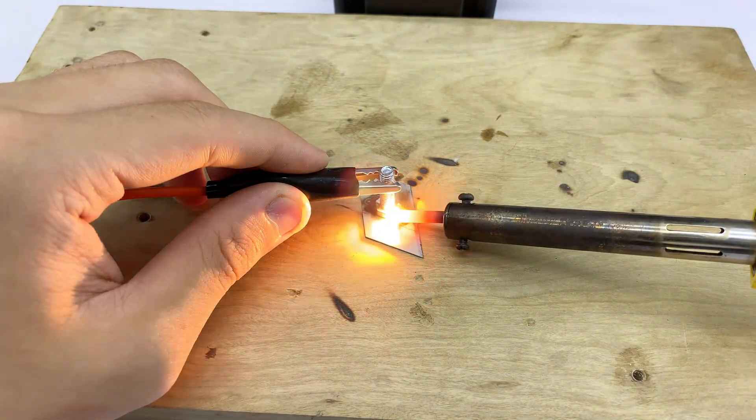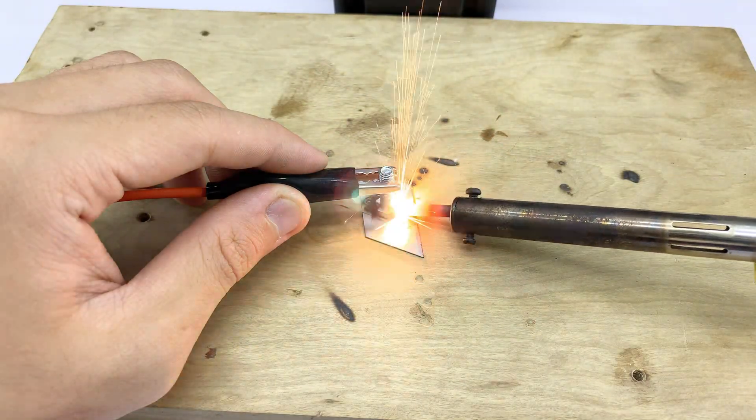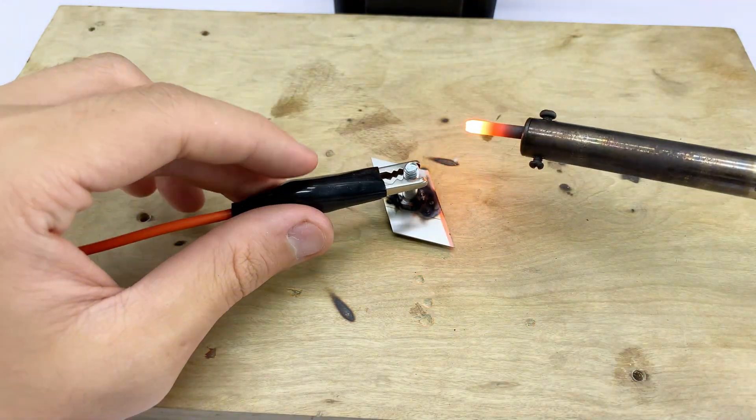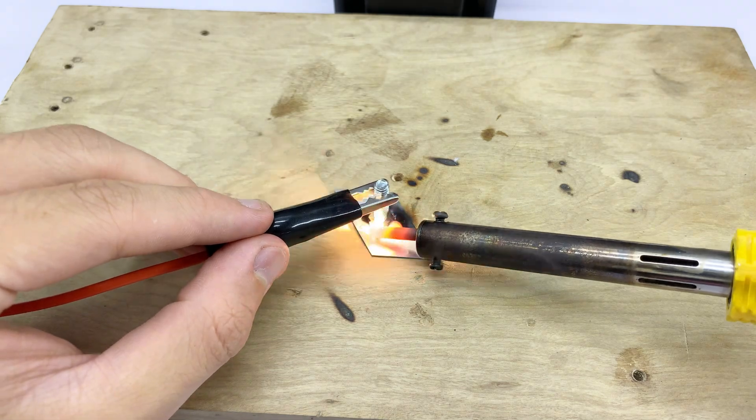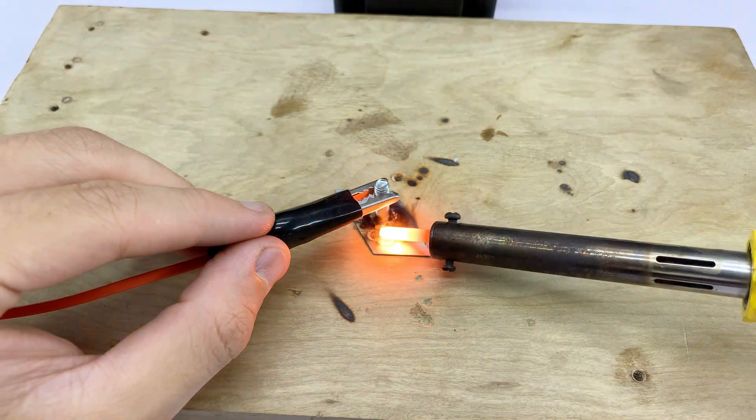It heats up quickly and is able to melt solder effectively on this small metal piece. As you can see, it quickly heated a metal piece to a glowing red, proving its effectiveness as a portable soldering iron.